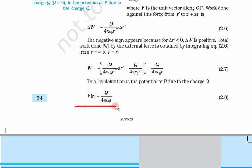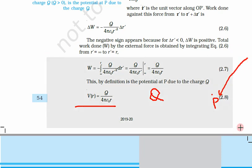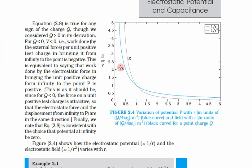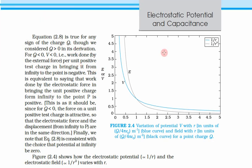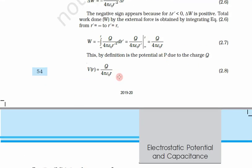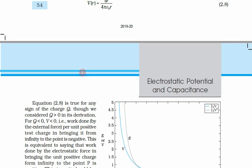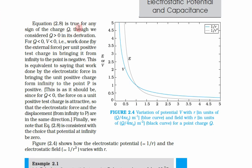We had seen the potential of any positive charge q at a point p by bringing a test charge from infinity to that point. Now let us see some important graphs. Equation 2.8 is q upon 4 pi epsilon naught r.